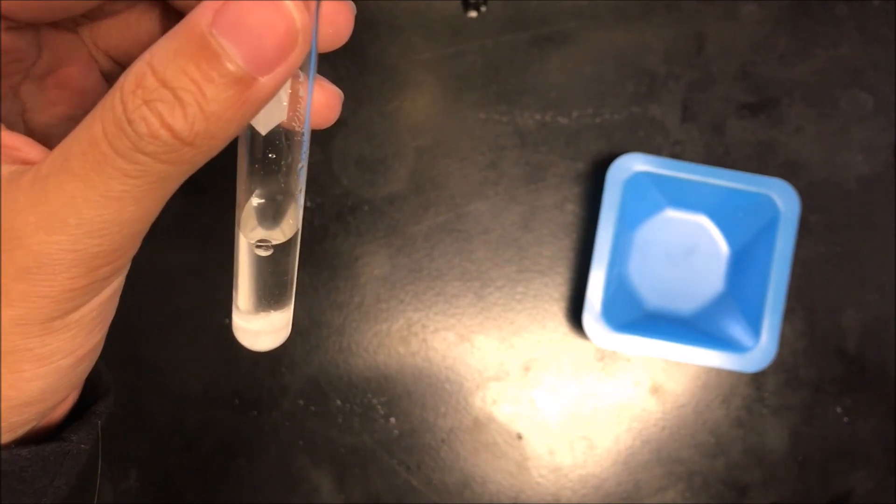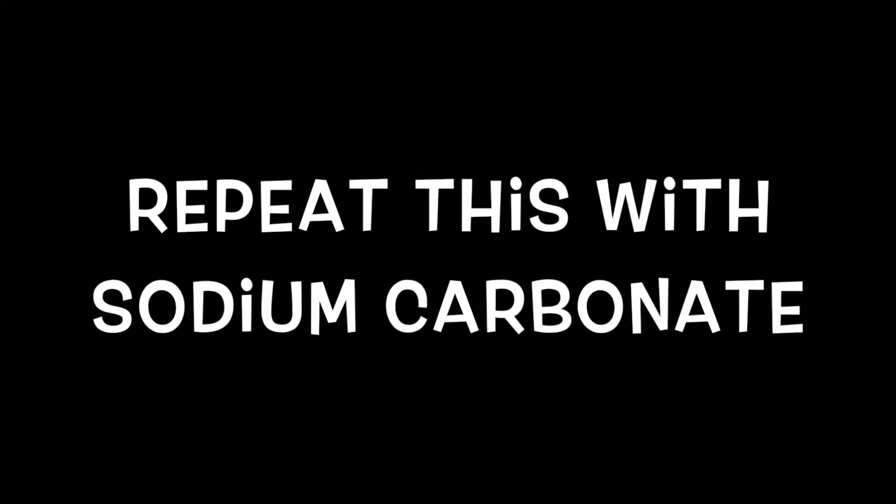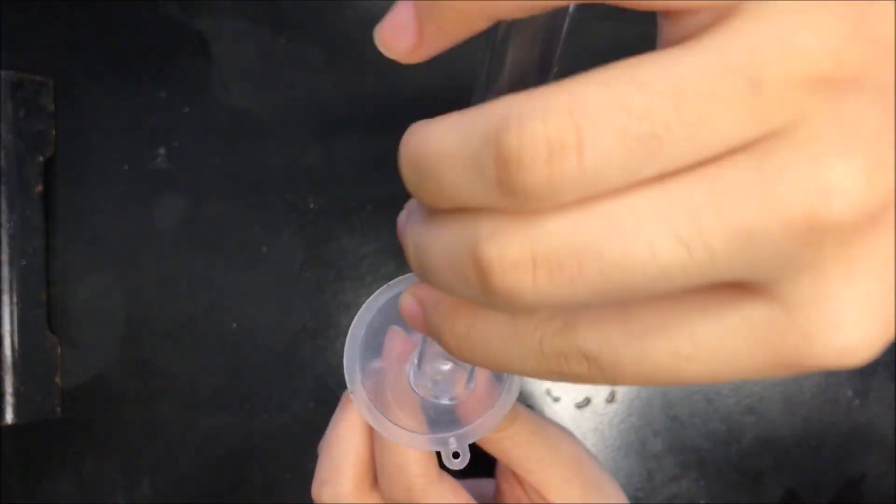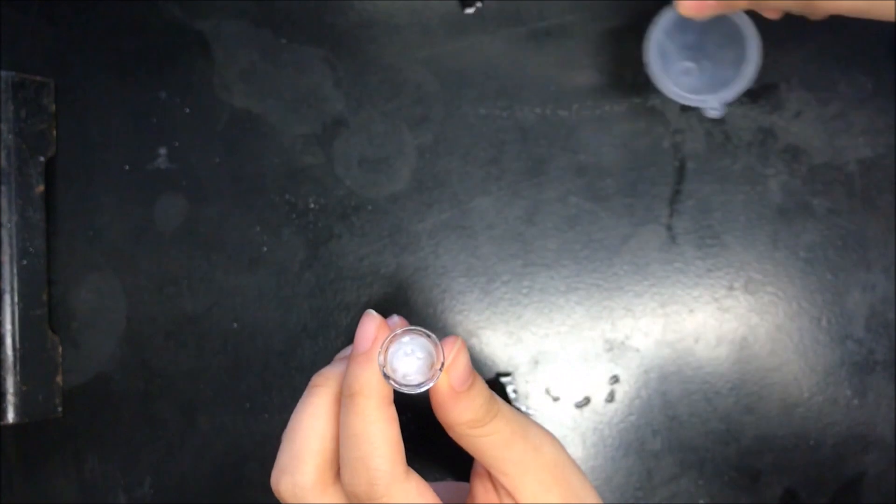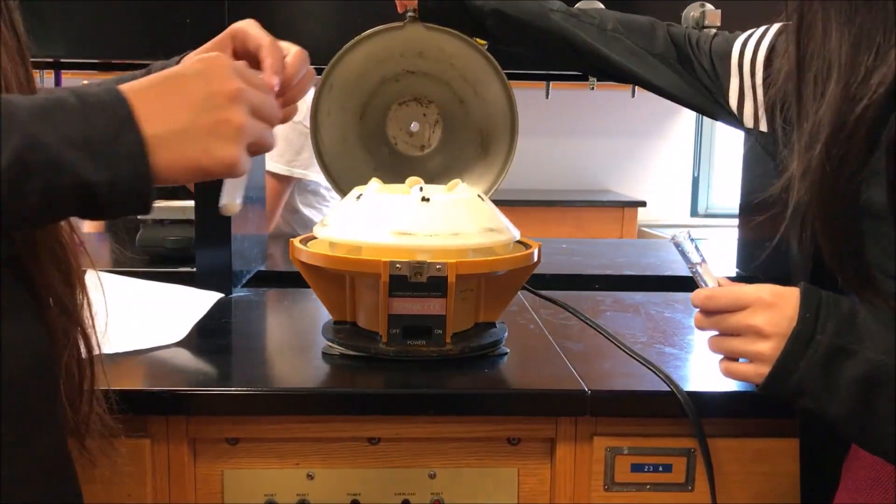Next, dissolve it in water so that the test tube is one third full. Make sure your solution is fully dissolved. Repeat this step with sodium carbonate. Pour the contents of one test tube into another to cause a precipitation reaction. The solution should now be in the test tube of recorded mass. This is how it should look like.